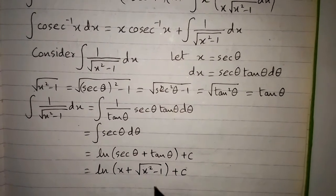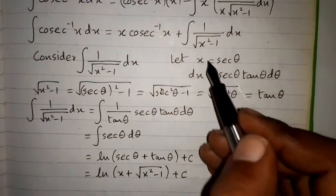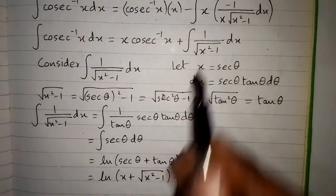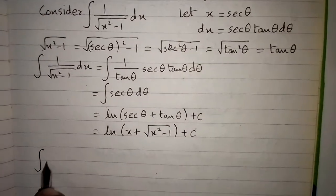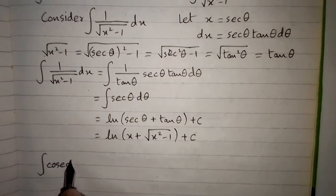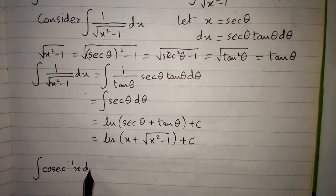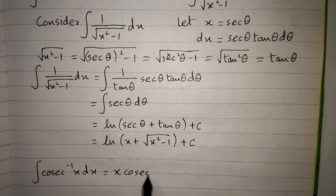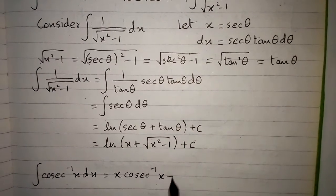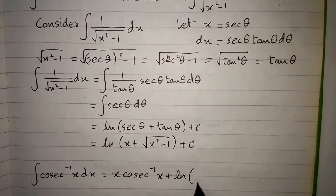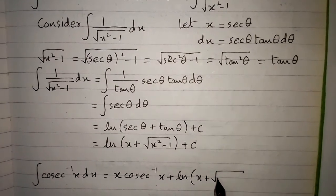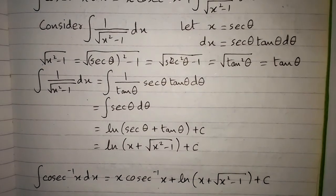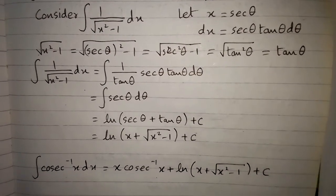Putting this result back into our expression, the integral of arcsecant inverse x dx equals x times arcsecant inverse x plus ln of x plus square root of x squared minus 1, plus C. This is the required integral.